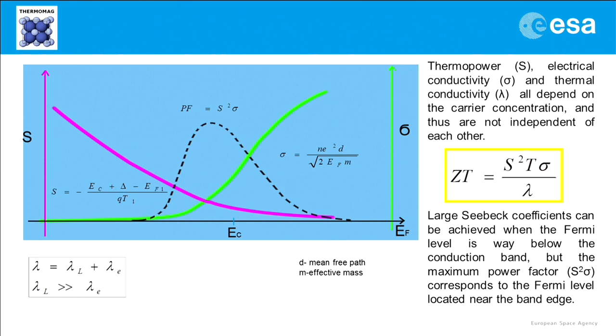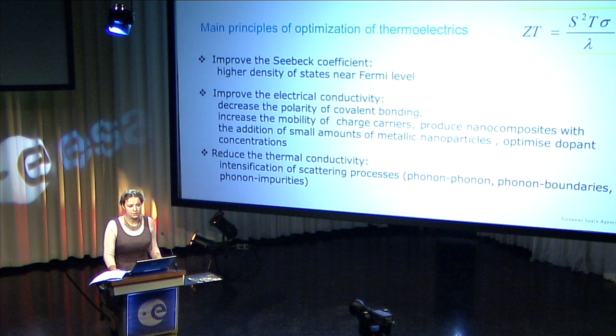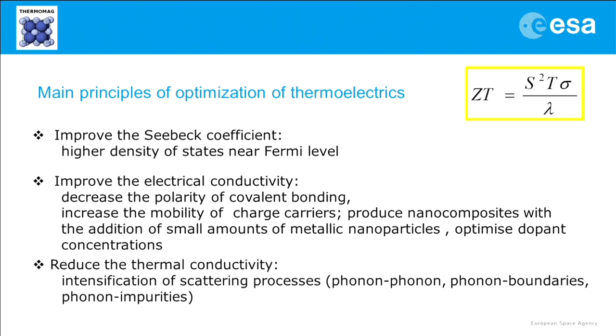In order to improve these properties, what can we do? For the improvement of the Seebeck coefficient, we can alter the band structure by doping and co-doping, and try to get high density of states near the Fermi level. To improve electrical conductivity, we decrease the polarity of the covalent bonding. We try to increase the mobility of charge carriers. We can produce nanocomposites with pieces of metals in order to improve conductivity. And for reduction of thermal conductivity, we need to intensify the scattering processes, including phonon-phonon scattering, phonon-boundary scattering, and phonon-impurity scattering.